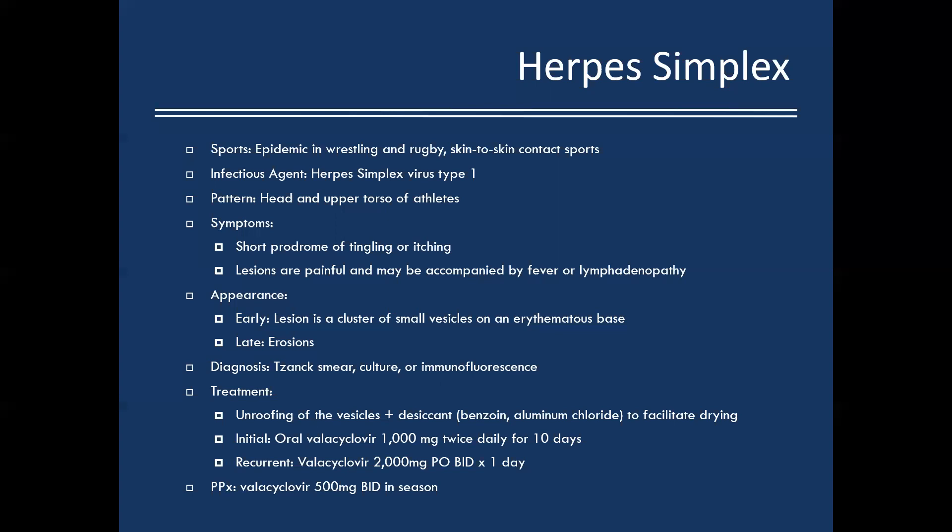In terms of treatment, you want to unroof the vesicles and apply a desiccant — either benzoin or aluminum chloride — to facilitate drying. Once unroofed and dry, they're no longer contagious. For medication, use oral valacyclovir: 1,000 mg twice daily for 10 days for the initial outbreak. For recurrent cases, there's good data for valacyclovir 2,000 mg PO twice a day for one day, which performs just as well as older three- and five-day regimens.